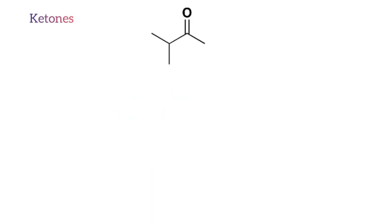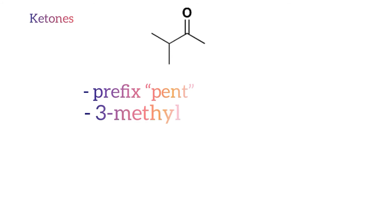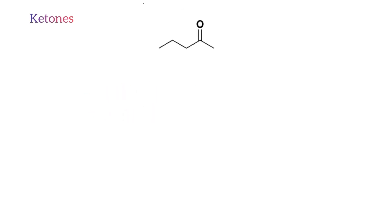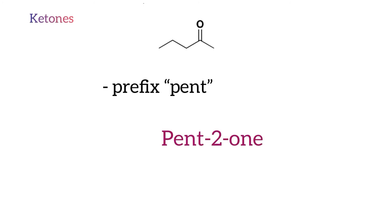Here is another example of a ketone compound — pause the video and give it a try. There are five carbon atoms, therefore the prefix will be 'pent'. There is a methyl group attached on carbon three, therefore the molecule name starts with '3-methyl'. As such the name of this molecule will be 3-methylpentan-2-one, where the '2' indicates the location of the carbonyl functional group. Here is another example: there are five carbon atoms in the main chain and no substituents, so the name of this molecule will be pentan-2-one.